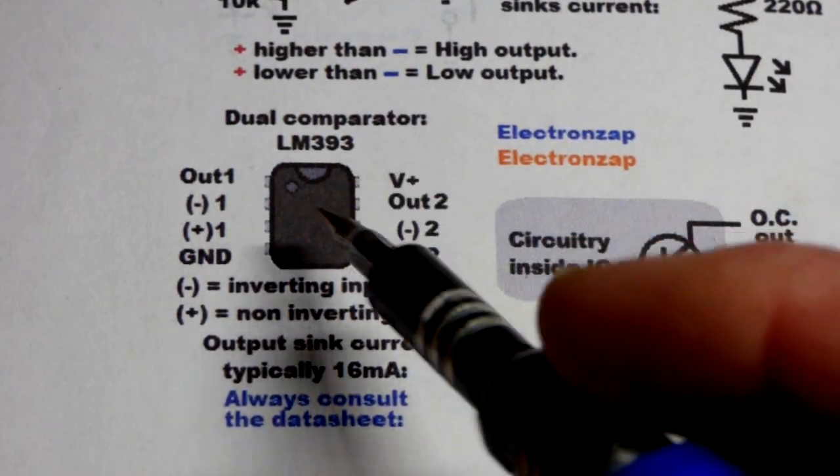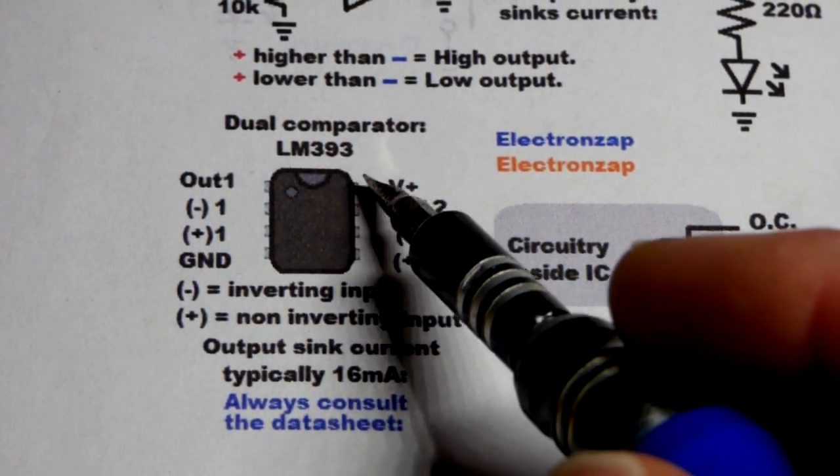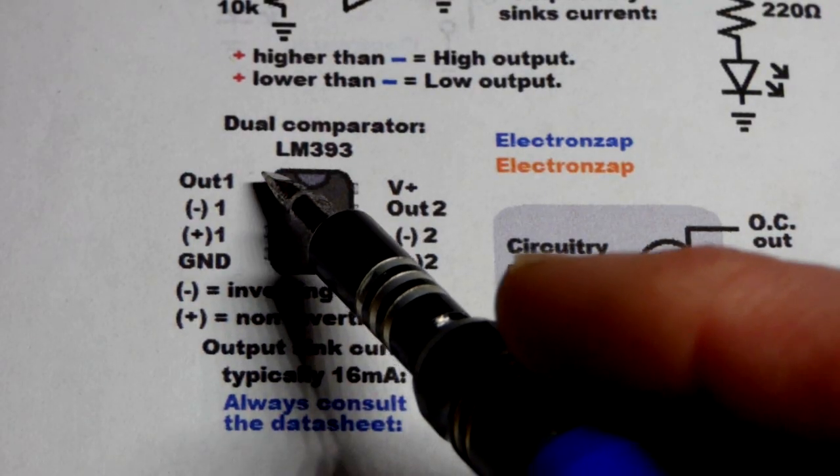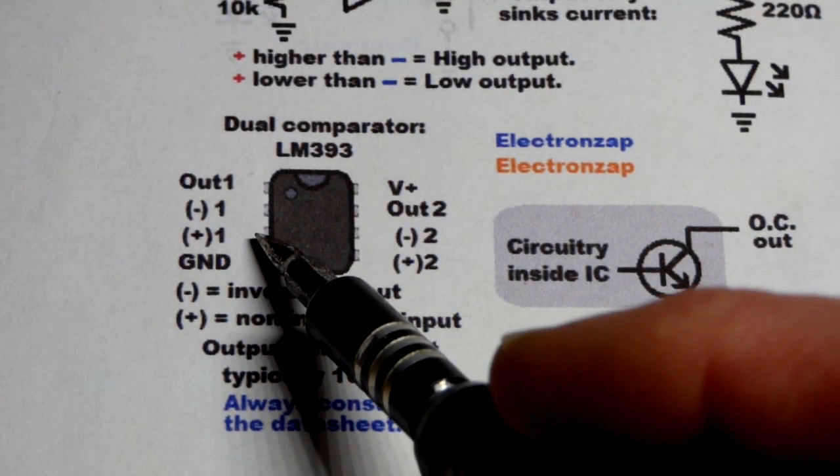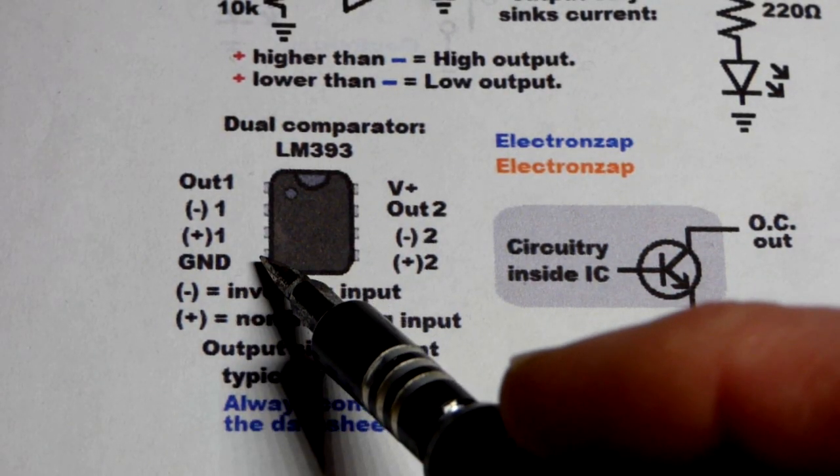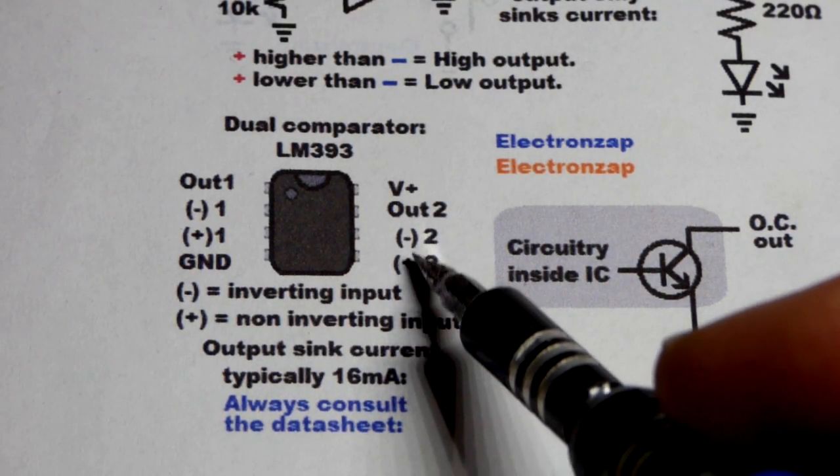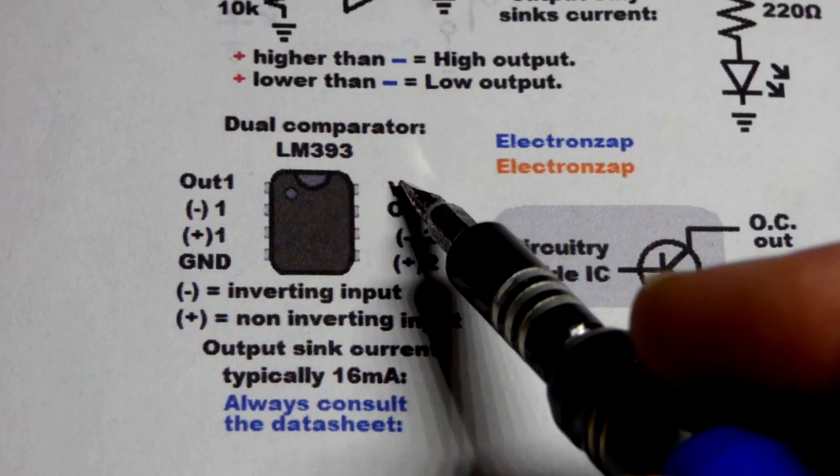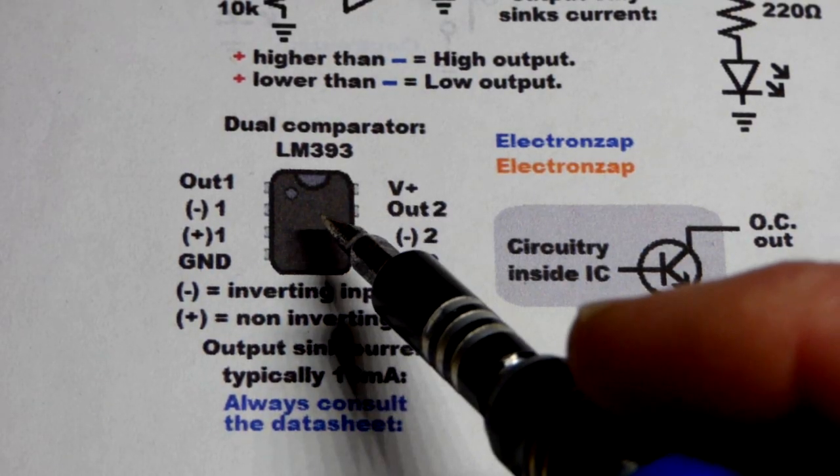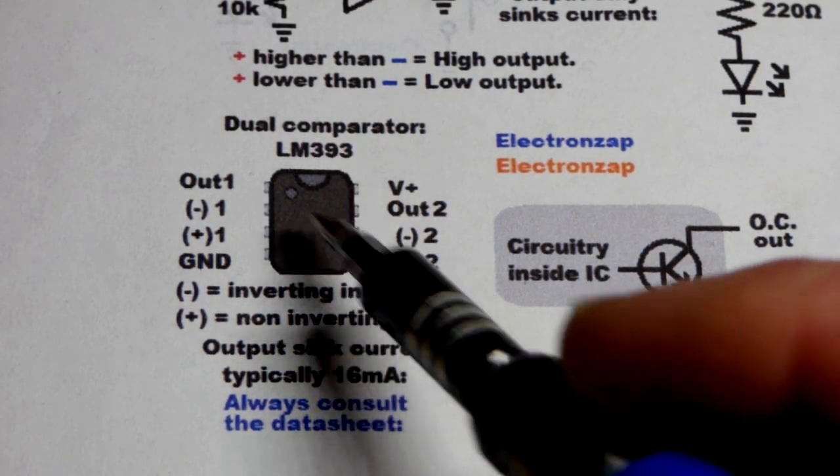When you look at the actual component, it's in the dual inline package or DIP. The number one pin is to the left right there, and then we got the ground pin over there. We jump over to the right there, we got the number two comparator, and the positive supply up there. That's commonly how things are numbered on integrated circuits.